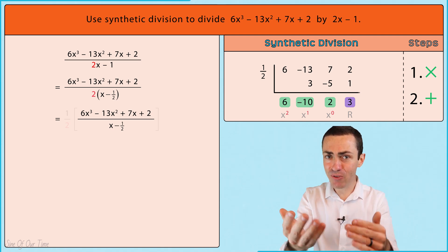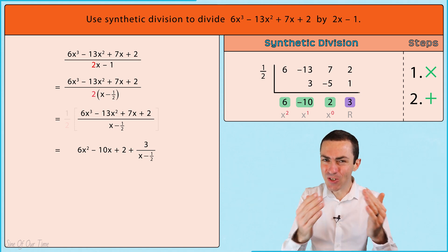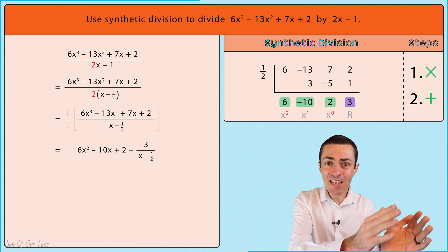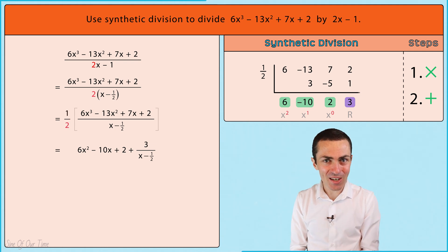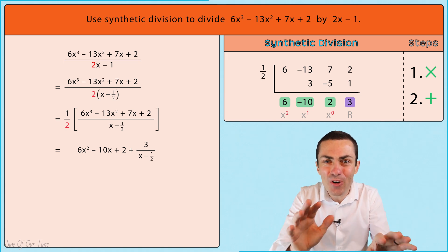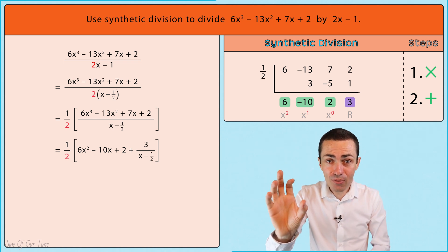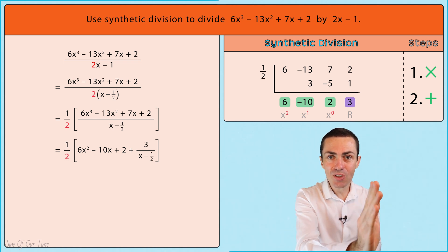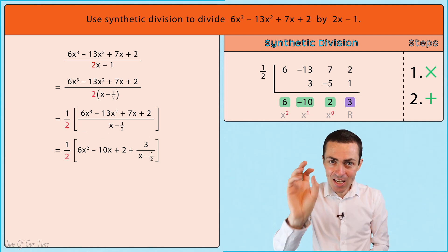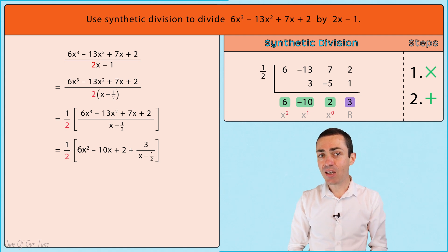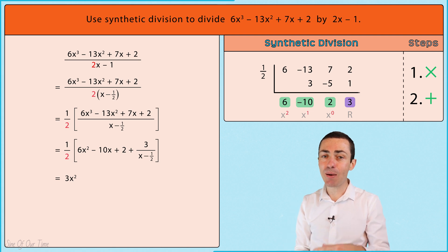Usually at this stage we could just write down the results and be done, but remember we were forced to take out that one-half and write it in front of the brackets, which means we can't ignore it. We have to deal with it by taking the one-half and multiplying it by each of the terms inside the brackets. We take one-half and multiply by 6x² to give us 3x².